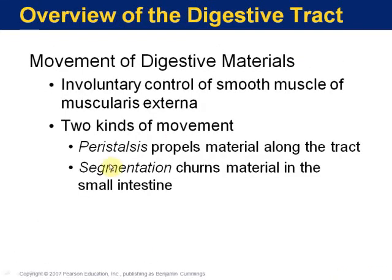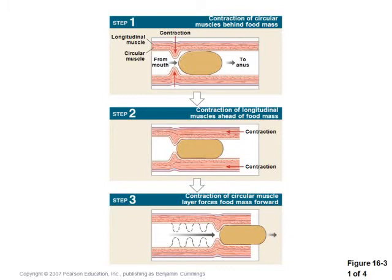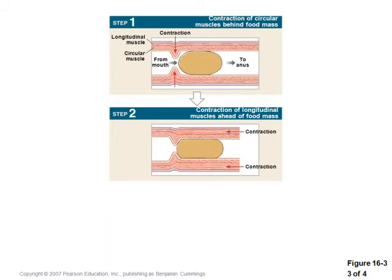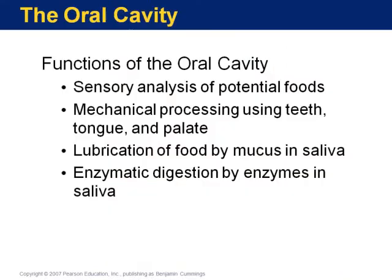Two very important terms: peristalsis propels the material along the track, and segmentation churns it. Peristalsis consists of wave-like contractions, whereas segmentation is more of your regional movements. These slides show how peristalsis pushes food through the digestive tract.